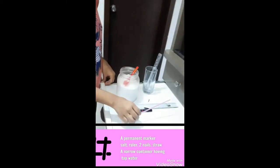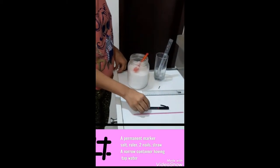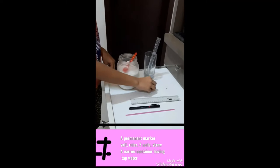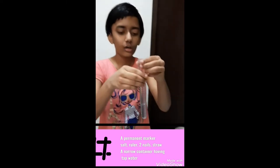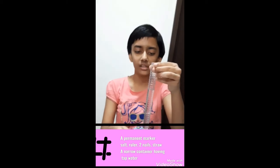Hi guys, welcome back to my channel. So today I'm going to be showing how to make a hydrometer. A hydrometer is used to measure the density of various liquids. So to make this you require a straw, a permanent marker, a ruler, two nails, a narrow container which has some water filled in, and some salt.